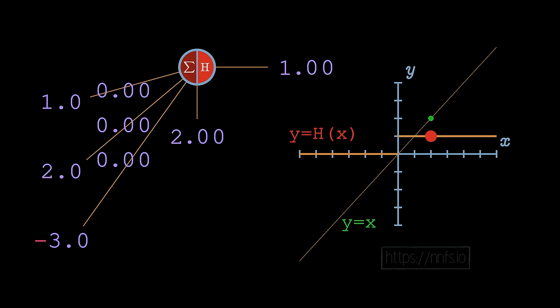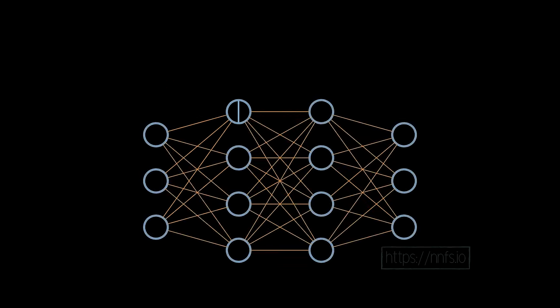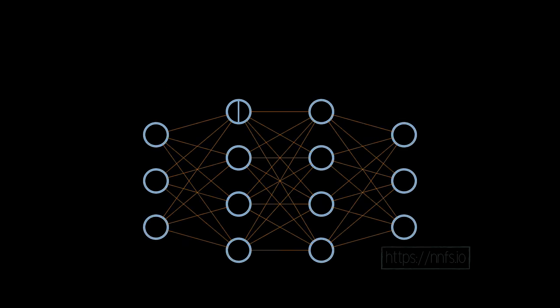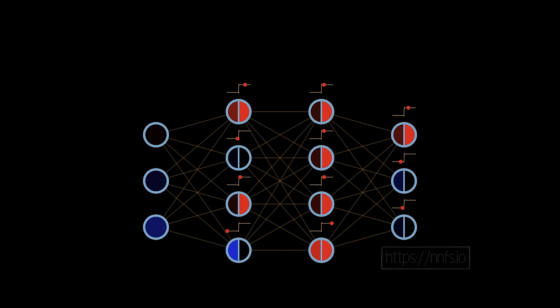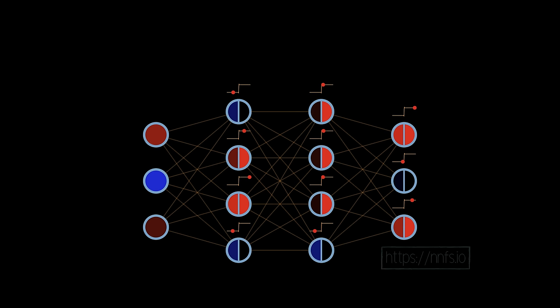The output from this activation function becomes the input to the next neurons. On the macro level, every neuron in your hidden layers and output layer will have an activation function. Most commonly, the output layer uses a different activation function than the hidden layers. For now we're just showing an example of step functions used throughout the network.